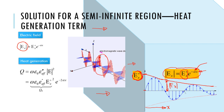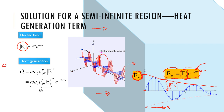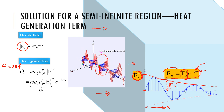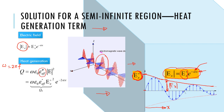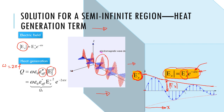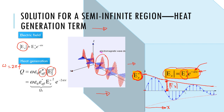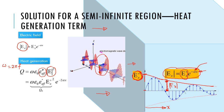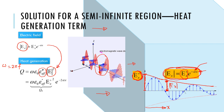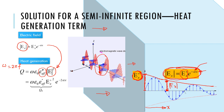The heat generation equation is q = ω·ε₀·ε''·|E|², where ω = 2πf (f is the frequency of the microwave), ε₀ is a universal constant (permittivity of vacuum), ε'' is the dielectric loss — a property of the material we'll detail later — and |E|² is the squared magnitude of the electric field. This magnitude is related to the surface value by the exponential equation we discussed.